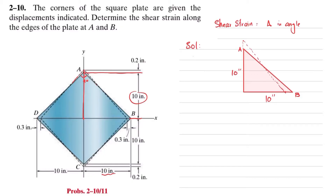This reduction is 0.3 inch while this increase is 0.2 inch. The initial angle at the corner was 90 degrees. If we take this half-angle it is 90 divided by 2, which is 45 degrees. We have to find the new angle theta dash — this is the angle after deformation — and you can see that the full new angle is theta dash, so the half-angle is theta dash divided by 2.